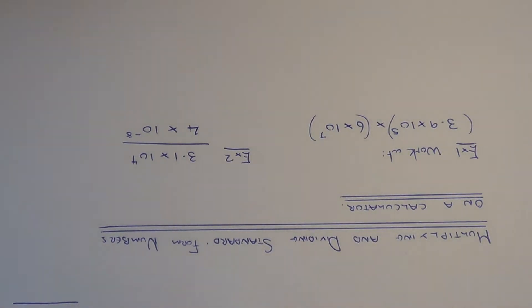Today I am going to show you how to multiply and divide numbers written in standard index form using a calculator. So example 1, we have 3.9 times 10 to the power 5 times 6 times 10 to the power 7.